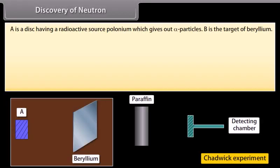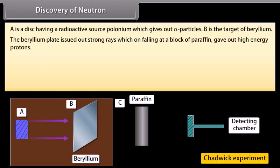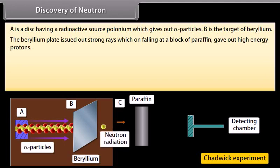Discovery of neutron. A is a disk having a radioactive source polonium which gives out alpha particles. B is the target of beryllium. Both A and B are placed in an evacuated chamber C. The beryllium plate issued out strong rays which on falling at a block of paraffin gave out high energy protons.